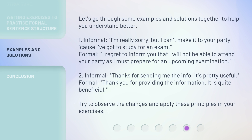Let's go through some examples and solutions together to help you understand better. First, informal: 'I'm really sorry, but I can't make it to your party because I've got to study for an exam.' Formal: 'I regret to inform you that I will not be able to attend your party as I must prepare for an upcoming examination.' Second, informal: 'Thanks for sending me the info. It's pretty useful.' Formal: 'Thank you for providing the information. It is quite beneficial.' Try to observe the changes and apply these principles in your exercises.